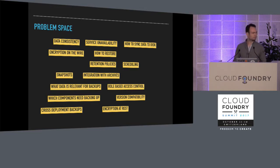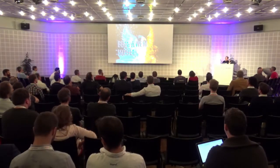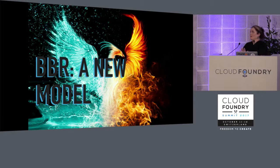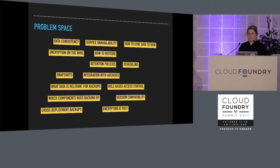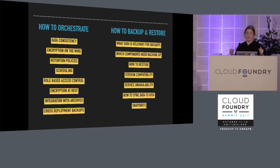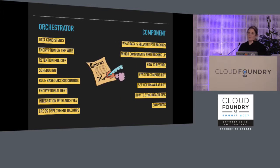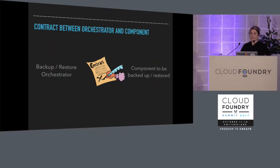Therese is going to talk about how we solved this. We took all the things we learned when looking at other solutions for backup and restore and came up with a new model. Starting from the problem space, we divided the issues into two categories. One category — how to orchestrate — includes all the concerns around the backup: things like encryption, scheduling, artifact management. The other category is how to do the actual backup and restore: what data needs to be backed up, how is the data backed up, and what does a restore look like?